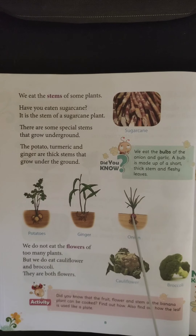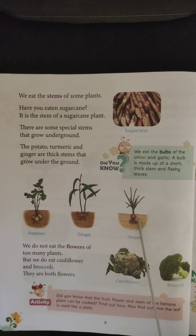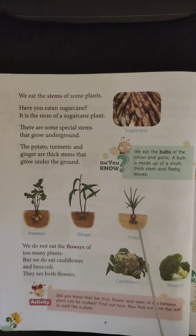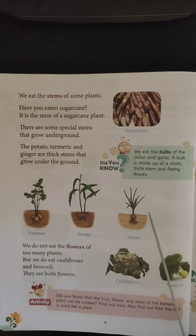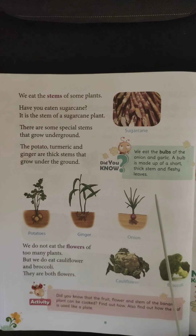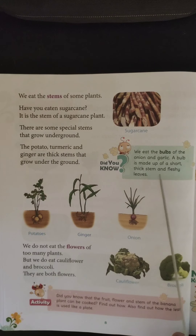This part of the onion is called a bulb, and the same applies to garlic. A bulb is made up of a short, thick stem. It is called a bulb mainly because of its somewhat swollen shape. A bulb is made up of a short, thick stem and fleshy leaves.